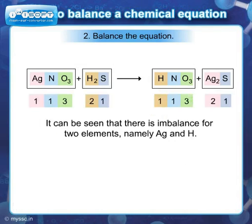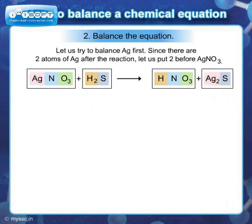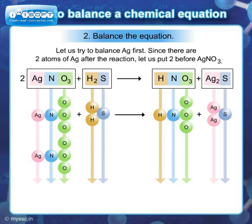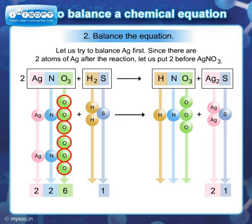Thus, there is imbalance for two elements namely Ag and H. Let us try to balance Ag first. Since there are two atoms of silver after the reaction, let us put two before AgNO3. Since we have two molecules of AgNO3, we have two atoms of Ag, two atoms of N and six atoms of O.